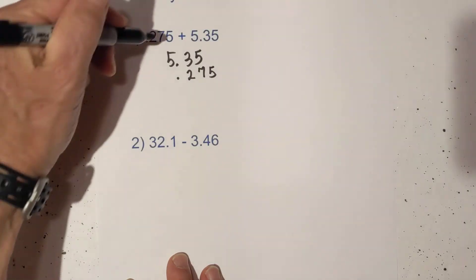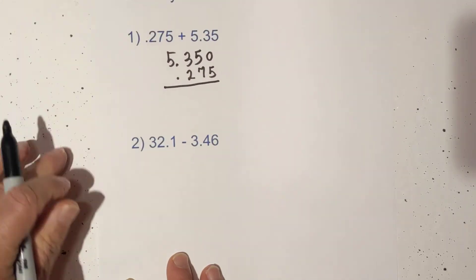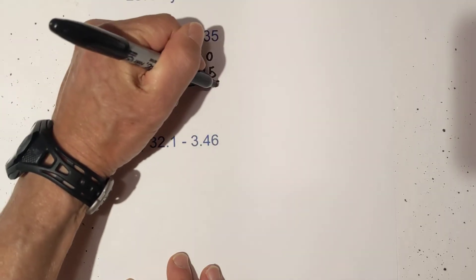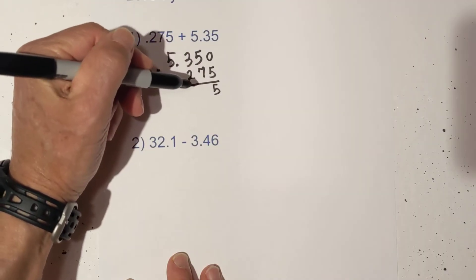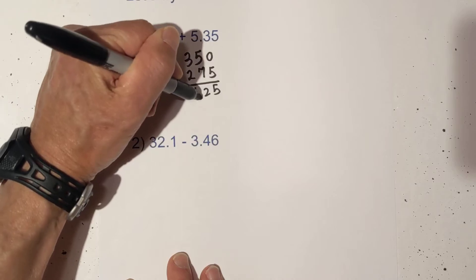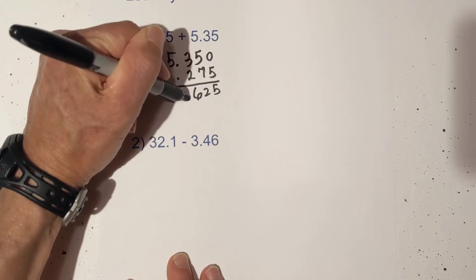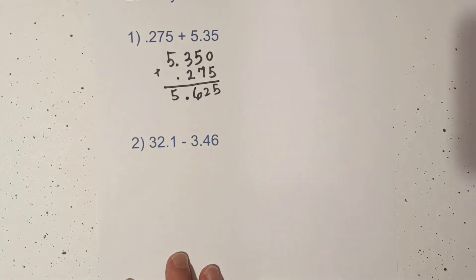I'm going to fill in 0 as a placeholder. Then all we do is add: that's 5, that looks like 12, carry the 1, 3, 4, 5, that's 6, there's 5, and then bring down the decimal. So it's 5.625.